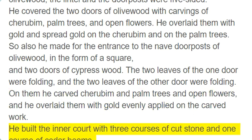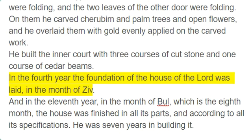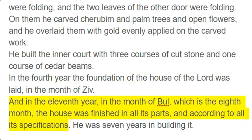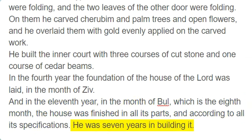He built the inner court with three courses of cut stone and one course of cedar beams. In the fourth year the foundation of the house of the Lord was laid, in the month of Ziv. And in the eleventh year, in the month of Bul, which is the eighth month, the house was finished in all its parts and according to all its specifications. He was seven years in building it.